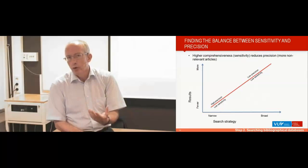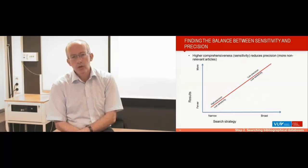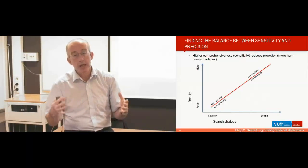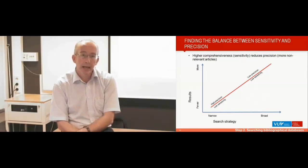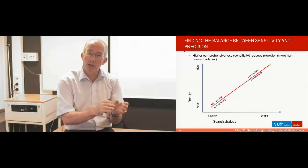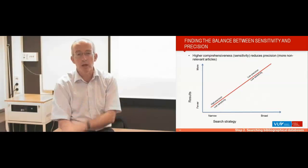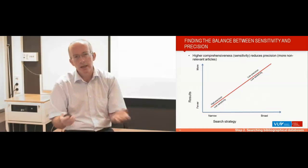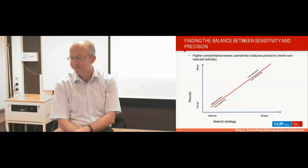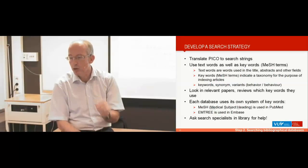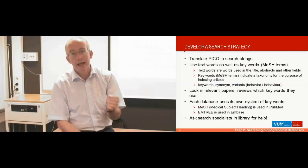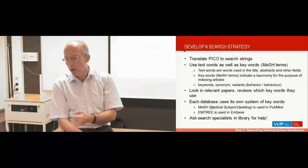For example, we just did a meta-analysis on the association between depression and excess mortality in prospective studies, and we searched about 15,000 abstracts — which is a lot, but it's not that bad if you really do it. So if you develop a search strategy, you have to translate your PICO into search strings, and you have to remember to use both text words and keywords, which I will show later in PubMed.